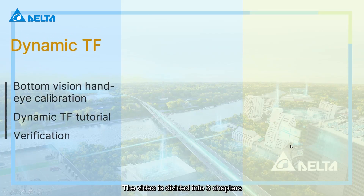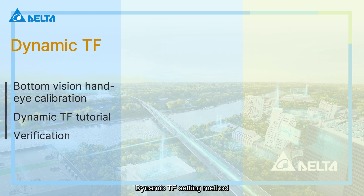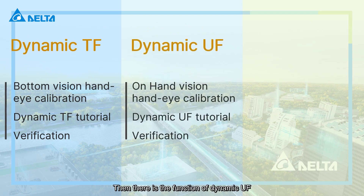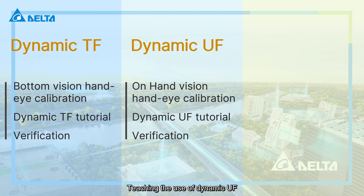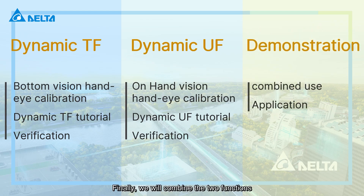The video is divided into three chapters. First, we will introduce dynamic TF, including bottom vision hand-eye calibration and the dynamic TF setting method, then verify the effect of dynamic TF. Then there is the function of dynamic UF hand-eye calibration with on-hand vision, teaching the use of dynamic UF and verifying the effect.